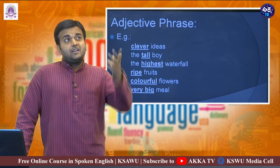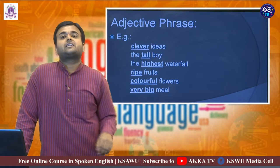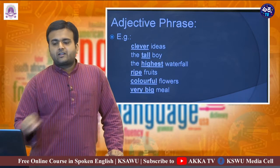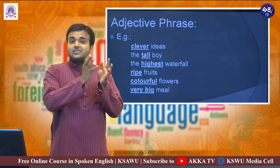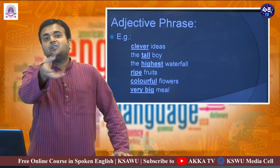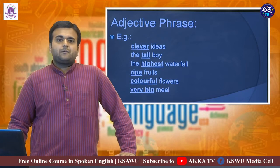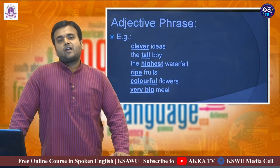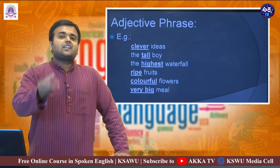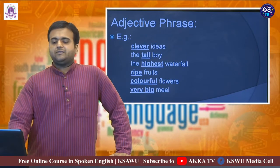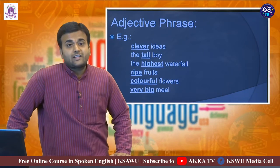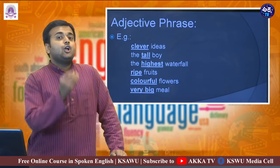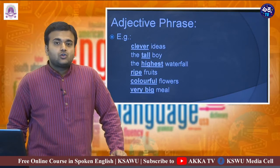'The highest waterfall' — here the adjective 'highest' gets importance. 'Ripe fruits' — fruits that are ripened, not raw. 'Colorful flowers' — how are the flowers? The flowers are colorful. 'A very big meal' — in that hotel they offer a very big meal at a low rate. I used two adjective phrases there.